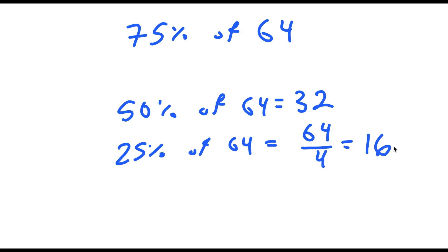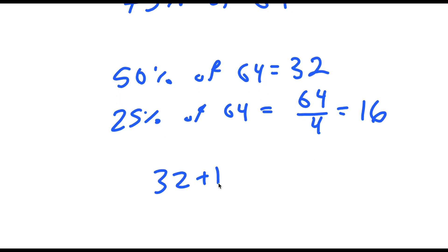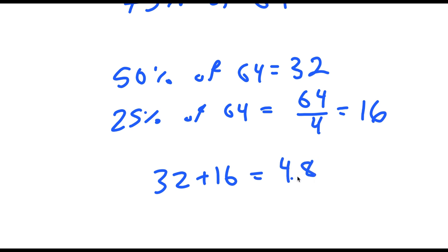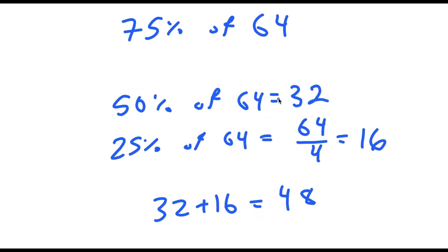Which is equal to 16. Now we just add these two, 32 plus 16, which is equal to 48. So 75% of 64 is 48.